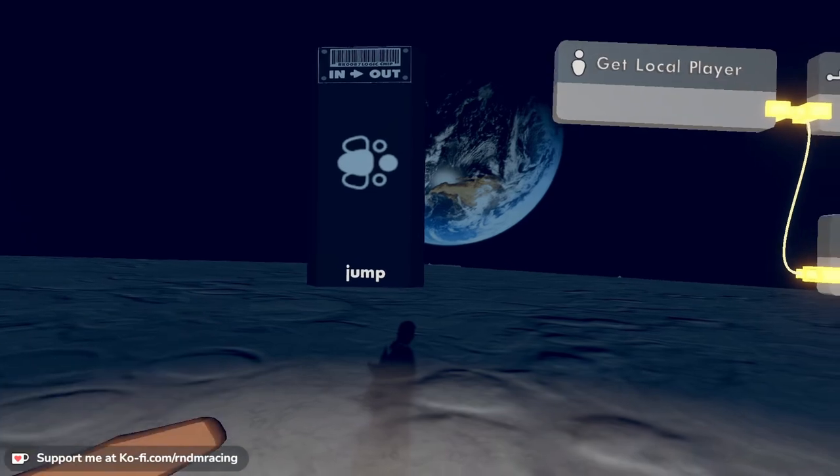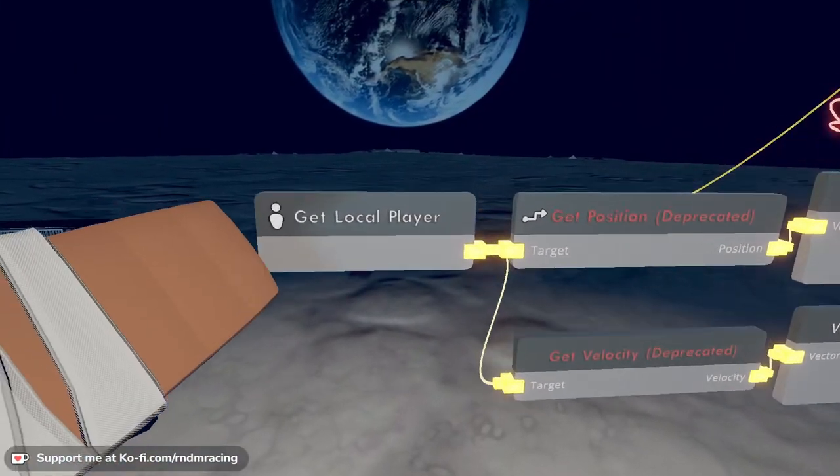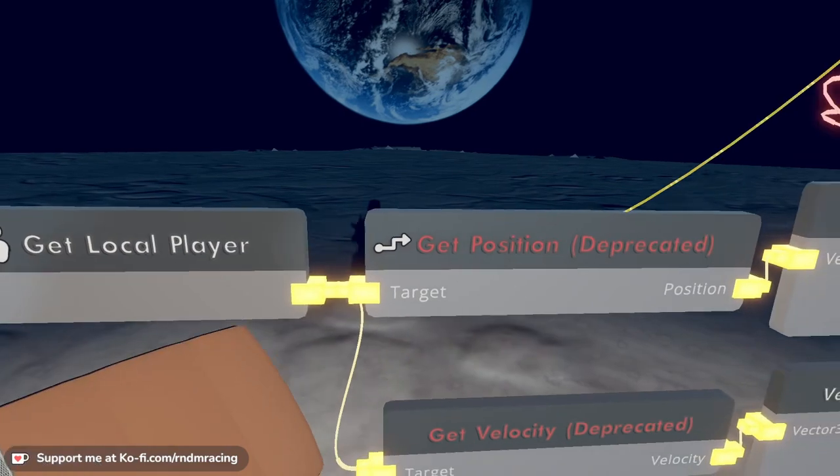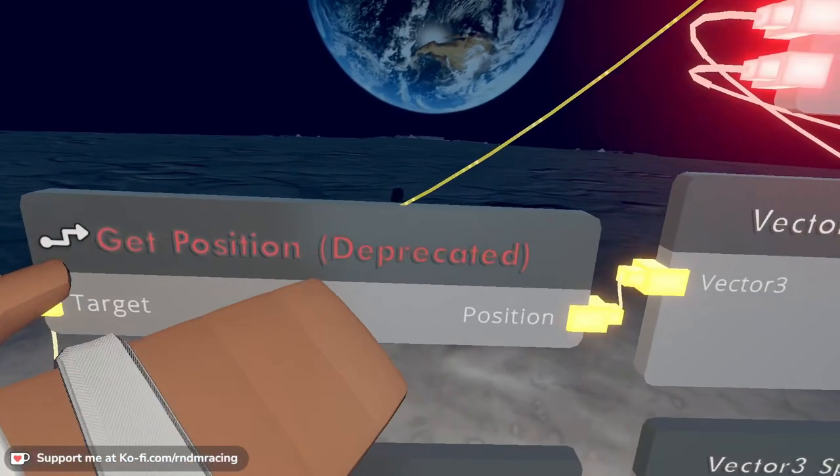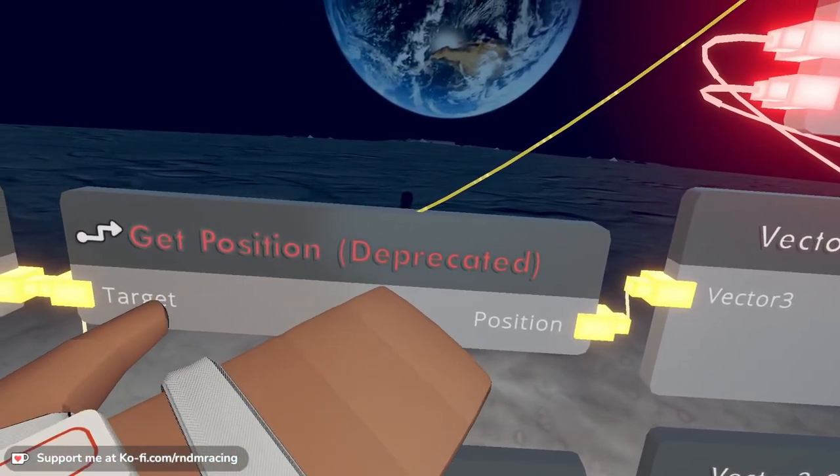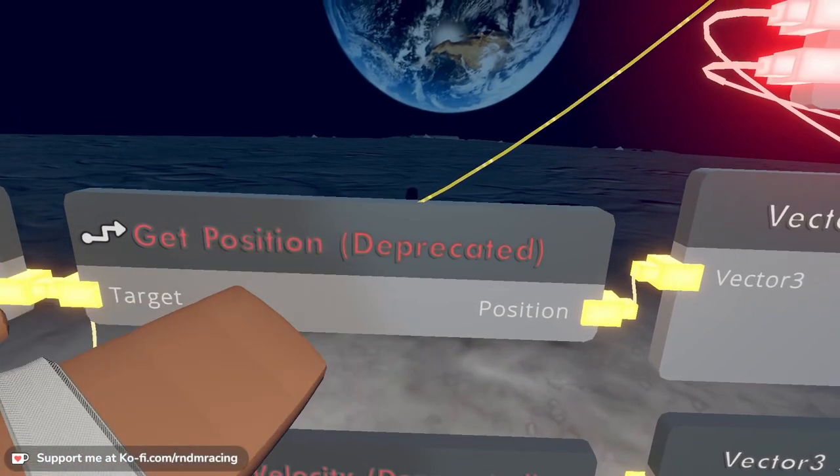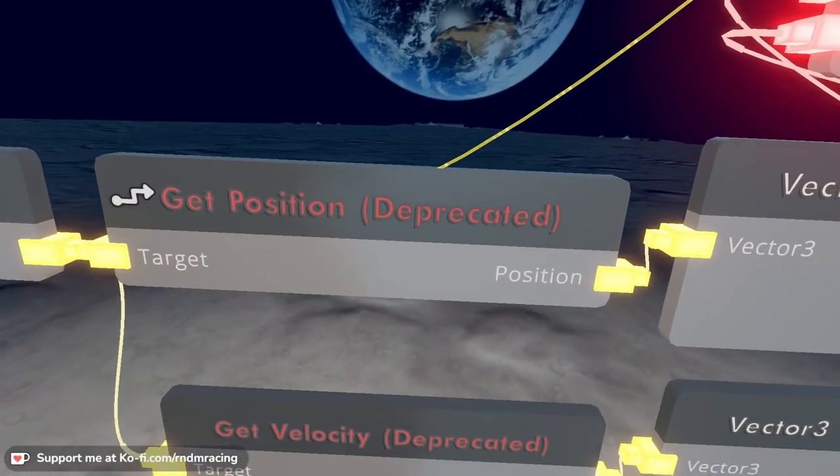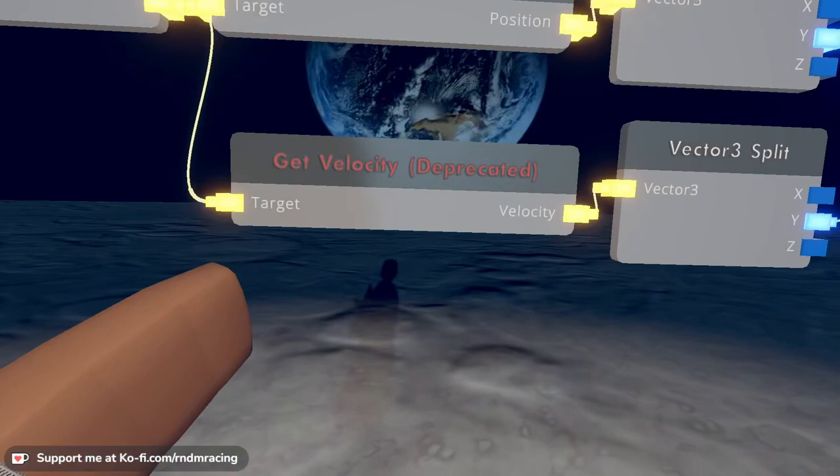Right now we have this here that we saw last time. We get the local player, we get the position. Deprecated just means that this chip is like an old version of it. Don't worry about that, but you can just use the normal Get Position right.